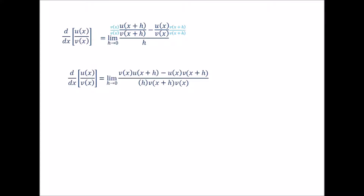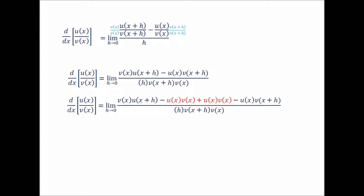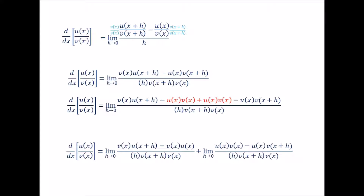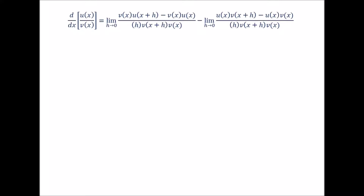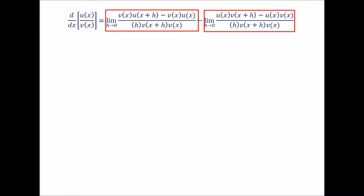The next thing we are going to do is introduce new terms: minus u of x times v of x plus v of x times u of x. The logic behind why I introduced these terms will become clear a little bit later in the derivation. By applying the limit property that the limit of a sum is equal to the sum of the limits, we split our limit into two limits. We factor out a negative one from our second limit, and the numerator becomes minus u of x times v of x plus u of x times v of x plus h. We can then conveniently factor out v of x and 1 over v of x plus h times v of x from our first limit, and factor out u of x times 1 over v of x plus h times v of x from our second limit.